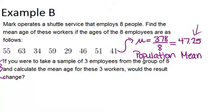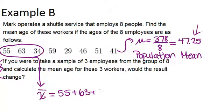Let's just try it out by picking these first 3 employees and calculating the sample mean for their ages. So the sample mean is usually noted by an x with a line over it. We're going to add up 55 plus 63 plus 34, and then divide by 3 in order to figure out that sample mean.